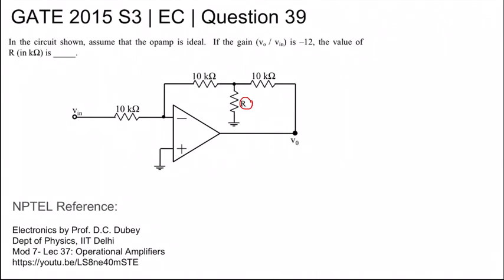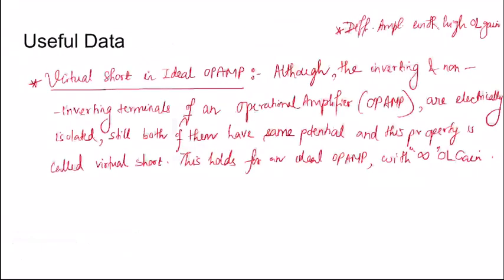For NPTEL reference, you can refer to module 7 lecture number 37 on operational amplifiers of the NPTEL course Electronics by Professor D.C. Dubey, Department of Physics, IIT Delhi. Useful data you will need: for an ideal op-amp, the inverting and non-inverting terminals appear to be virtually shorted. Although they are electrically isolated, the potential at both nodes are same, and this property is called virtual short. This holds true only for an ideal op-amp with infinite open-loop gain.